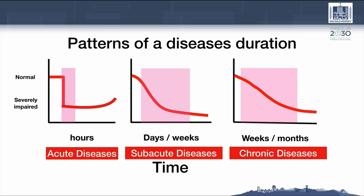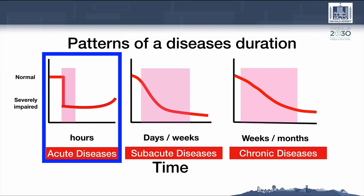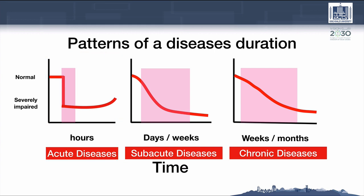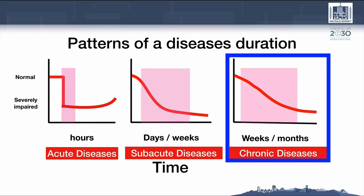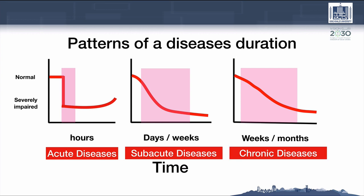Disease duration is also an important and crucial step to inquire about when taking a history. Diseases that started suddenly and stayed the same — non-progressive — patients will come very early to the hospital; this is an acute disease. Diseases with a progressive pattern over days or weeks will be sub-acute. Other slower diseases that take longer to change from normal to an impaired state may take weeks, months, or sometimes years — these are chronic diseases.